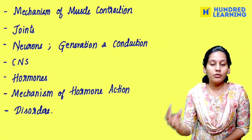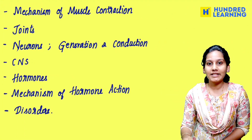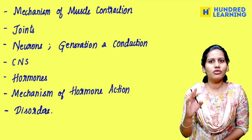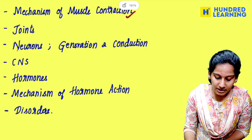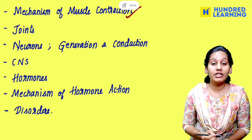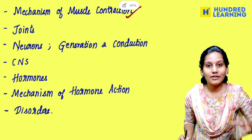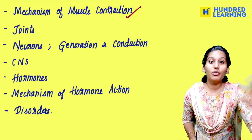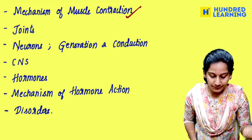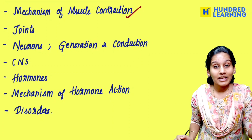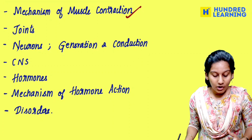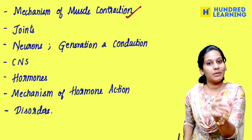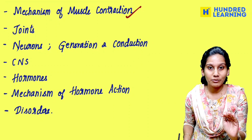Very importantly, locomotion and movement. In human physiology, there are four questions in this chapter. Mechanism of muscle contraction, joints, overjoint — here is a quick recall. And neurons, conduction. Central nervous system — complete, because in the chapter, in the second half, focus on the first half.